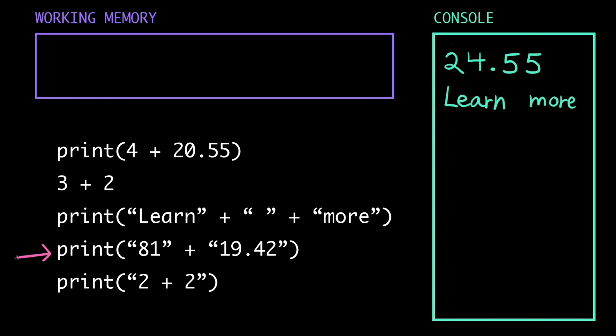What do you think the last two lines of this program do? Take a second and try and trace it yourself. Okay, this instruction has the expression the string 81 plus the string 19.42. Now these may look like integers and floats, but because there are quotation marks around them, the computer is going to treat them like strings. So when we evaluate this expression, we're concatenating strings and we get the string 8119.42. Nothing left to simplify here, so the computer pops outside the parentheses, sees the print, and then prints 8119.42 to the console. Then it clears out working memory and moves to the last line.